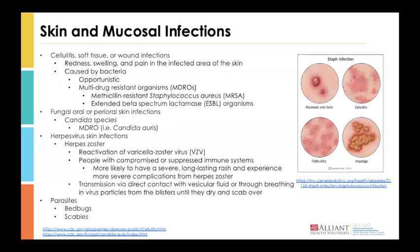Lastly, let's talk about skin and mucosal infections, which could potentially lead to sepsis. These include cellulitis or wound infections, fungal infections, and other infections. Cellulitis and wound infections are more dominant in terms of sepsis risk and are indicated by redness, swelling, or pain in an infected area of skin, usually caused by bacteria. Because the skin is inflamed or compromised, bacteria can get in and rapidly proliferate, causing signs and symptoms of infection that can continue to spread.